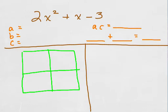We'll start by naming a, b, and c, which are 2, 1, and negative 3.